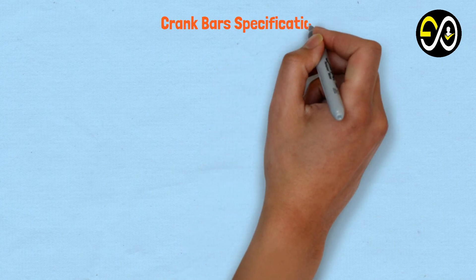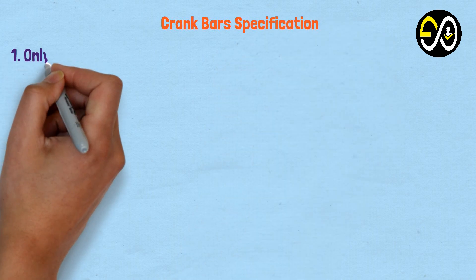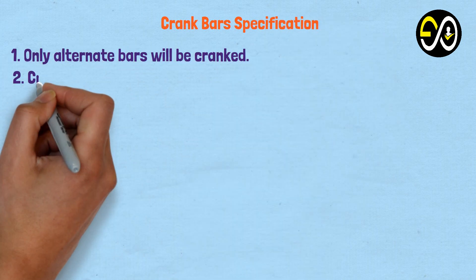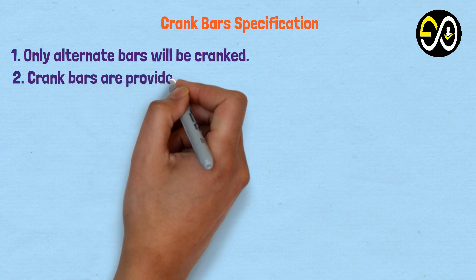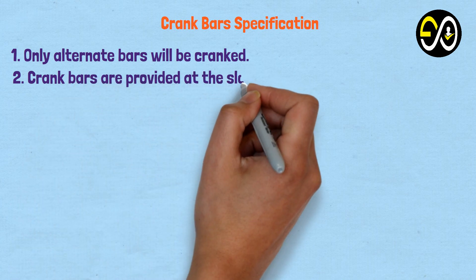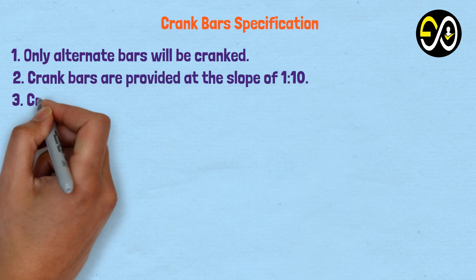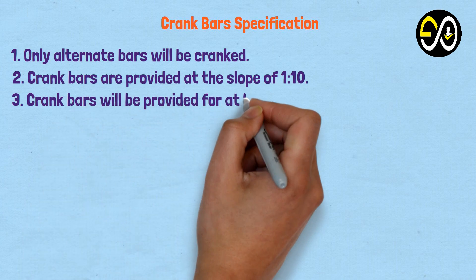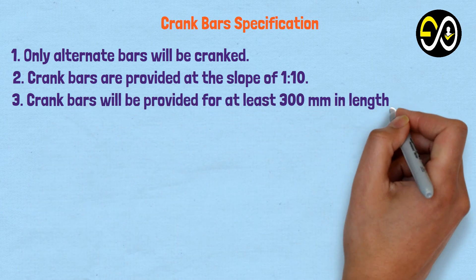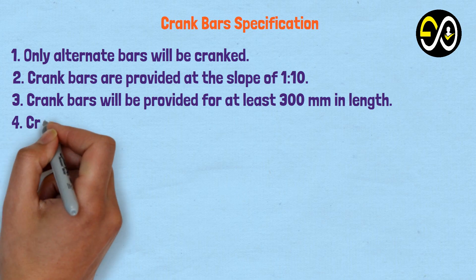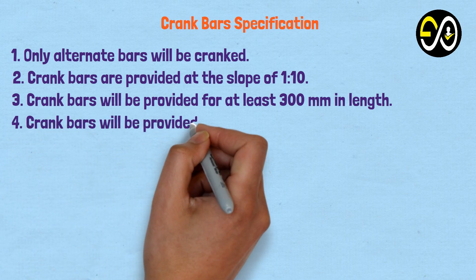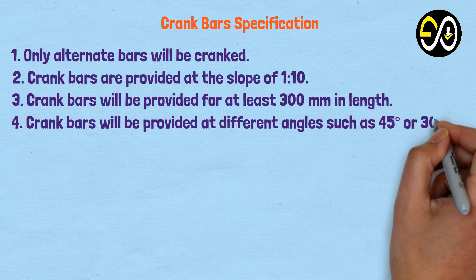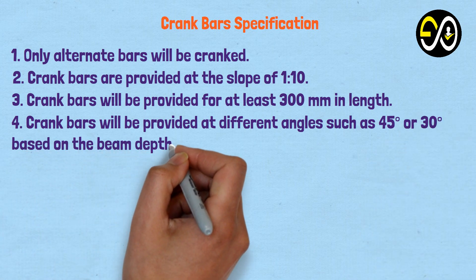Crank bar specifications: 1. Only alternate bars will be cranked. 2. Crank bars are provided at a slope of 1 in 10. 3. Crank bars will be provided for at least 300 mm in length. 4. Crank bars will be provided at different angles such as 45 degrees or 30 degrees based on the beam depth.